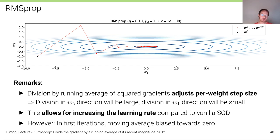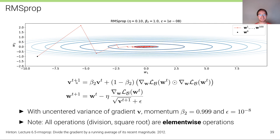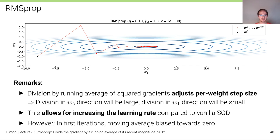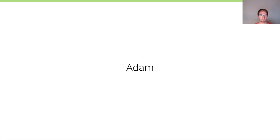The division by the running average of squared gradients adjusts the per-weight step size, allowing larger learning rates than vanilla SGD. However, in the first iterations the moving average is biased towards zero, causing large jumps because we divide by a very small number. This bias issue is addressed by Adam.